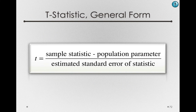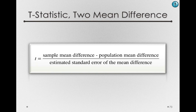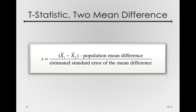Let's go back to the general form of the t-statistic and start filling in the actual values we'll use. We'll have duplicates of everything: a sample mean difference for the sample statistic, a population mean difference for the population parameter, and an estimated standard error of the mean difference for our denominator. The sample mean difference will be the difference between the sample mean for our first group minus the sample mean for the second group — that comparison will identify the effect of the drug.